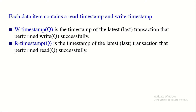Let us now discuss how timestamps are maintained for each data item. Since on each data item, read as well as write operations can be performed, for each data item we need to maintain read timestamp as well as write timestamp. Write timestamp of a data item Q indicates the timestamp of the transaction who recently performed the write operation on it successfully. Upon successful completion of each write operation, the write timestamp of the data item must be updated with the timestamp of that transaction. Similarly, read timestamp indicates the timestamp of the transaction who performed the read operation on it successfully.